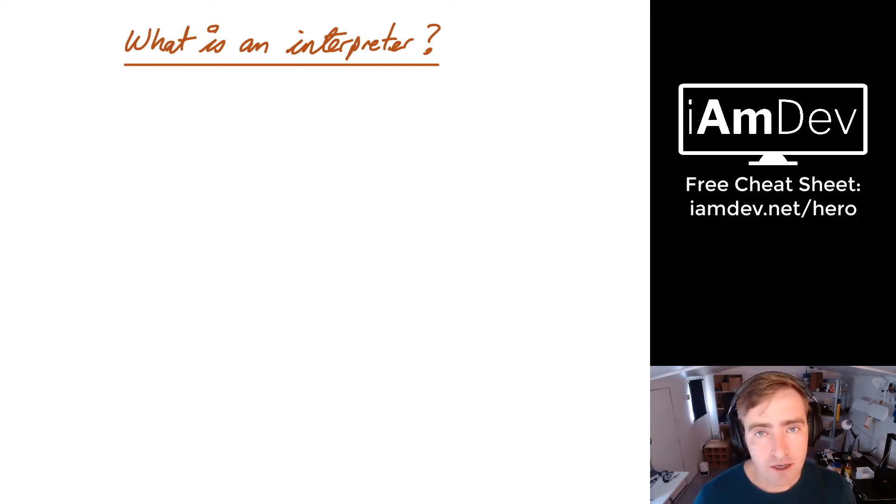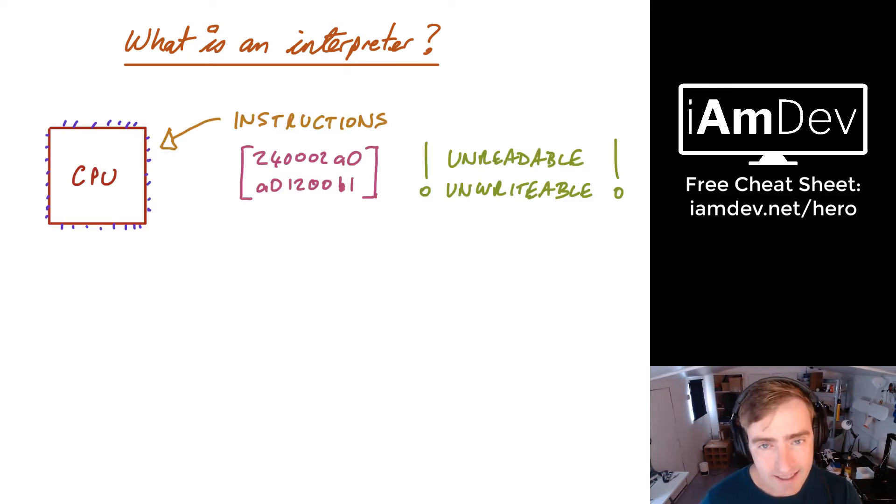Well, to understand what an interpreter is, you first need to go to the diagram of the CPU, which shows it takes instructions, which all come in hex code or machine code. Obviously, this is unreadable and unwriteable.